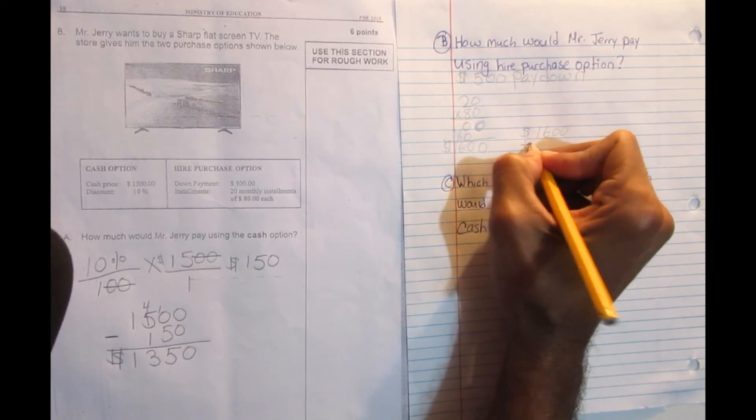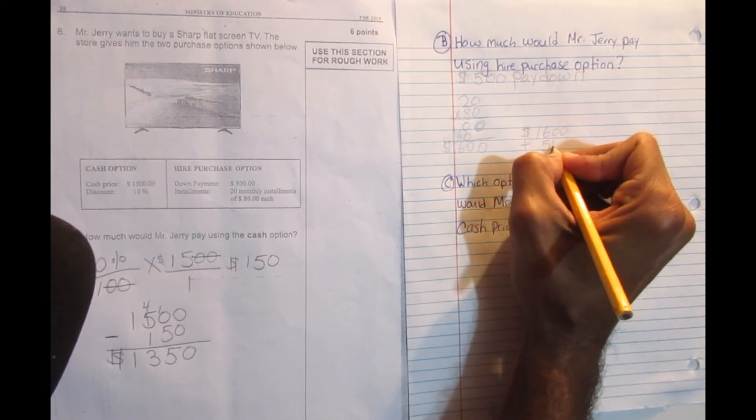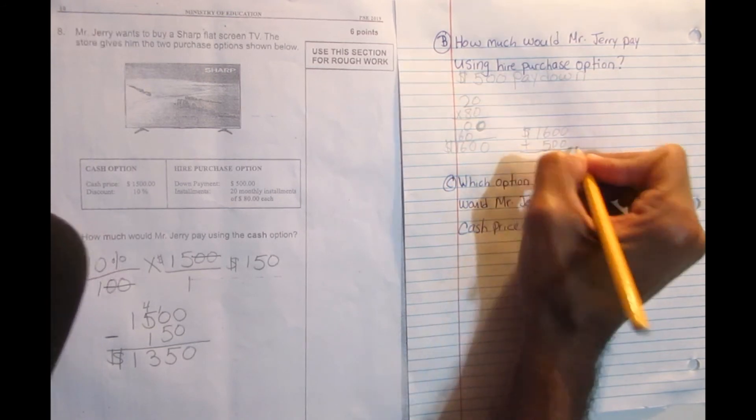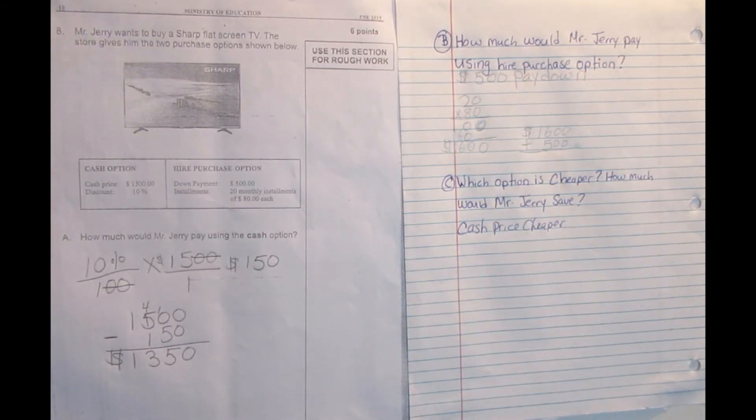So I have to add that, because I paid down. And when I add that $500, this will give me the hire purchase price.